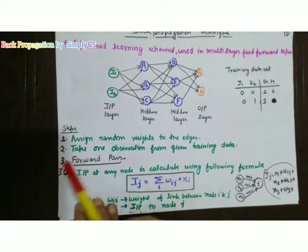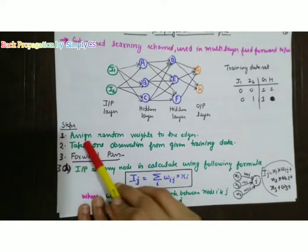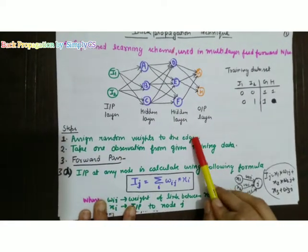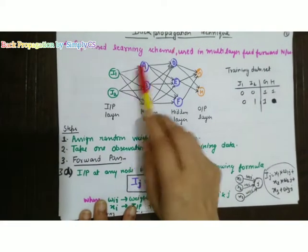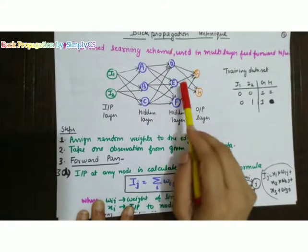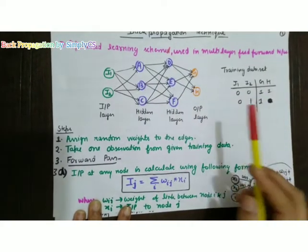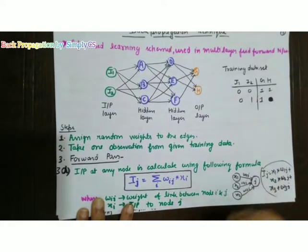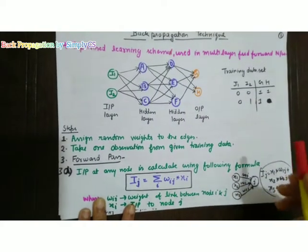The first step is to assign random weights to the edges. Whatever edges are present, we will assign random weights. We can have positive weights and negative weights.